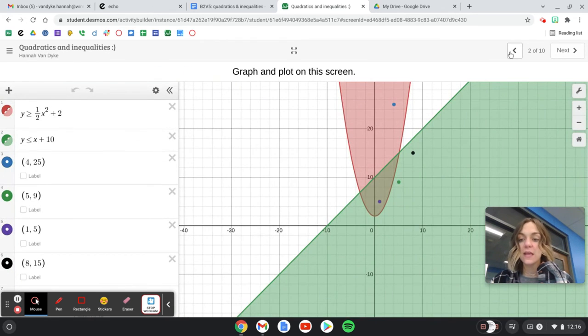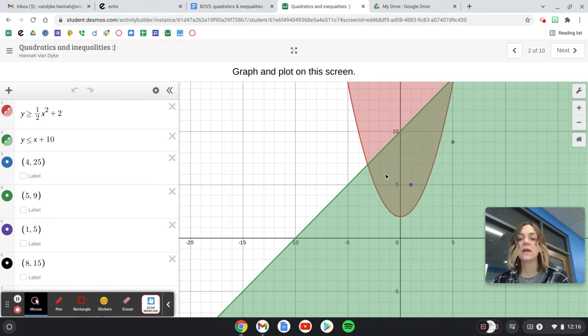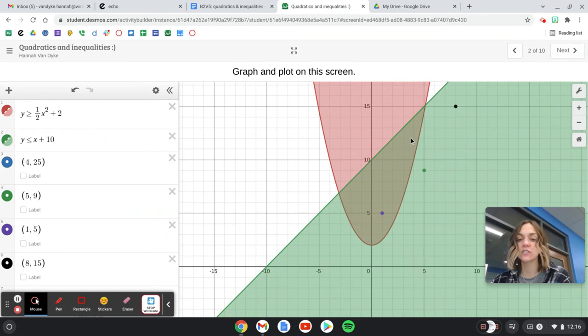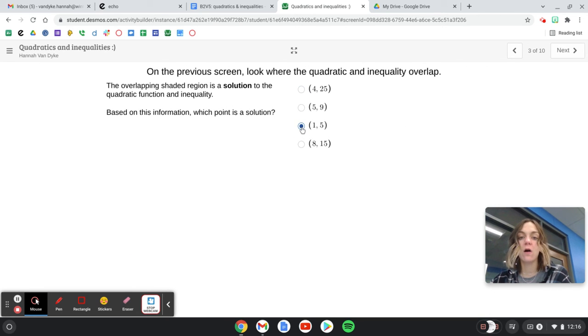So I'm going to come back here and find where my red and green areas overlap. Obviously, I only have one point that's in this double shaded region, and that's the purple point, which is (1,5). So then I'll select (1,5) on this screen, and then you'll move on.